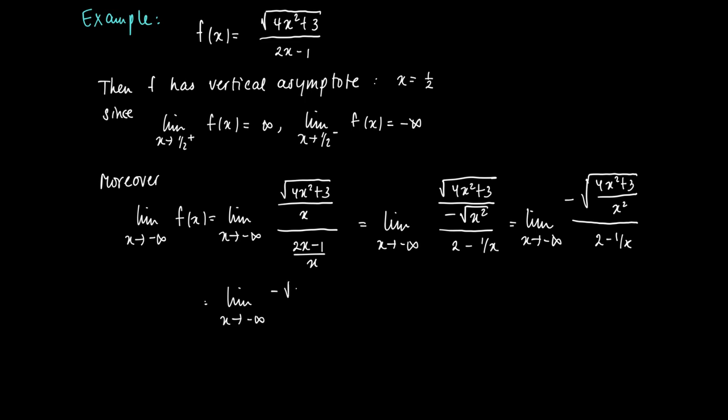Now we may divide the x² and find -√(4 + 3/x²) / (2 - 1/x). We see that 3/x² will have 0 as a limit, and 1/x of course goes to 0.